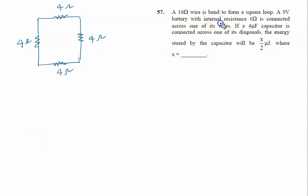A 9 volt battery with internal resistance 1 ohm is connected across one of its sides. Let me say we connect a battery having voltage 9 volt and internal resistance 1 ohm. This is the connection of the battery.